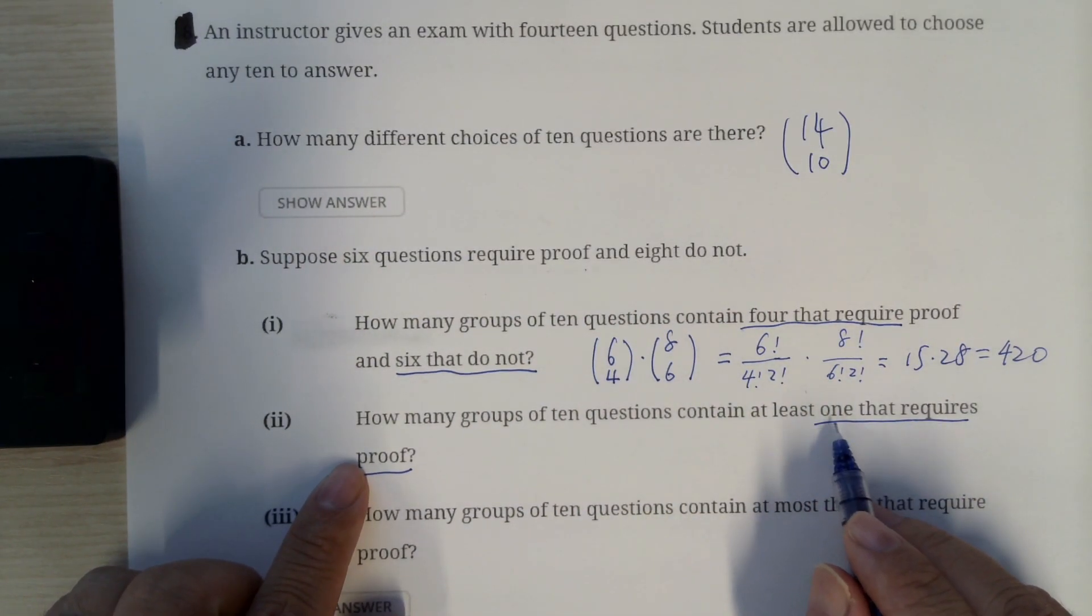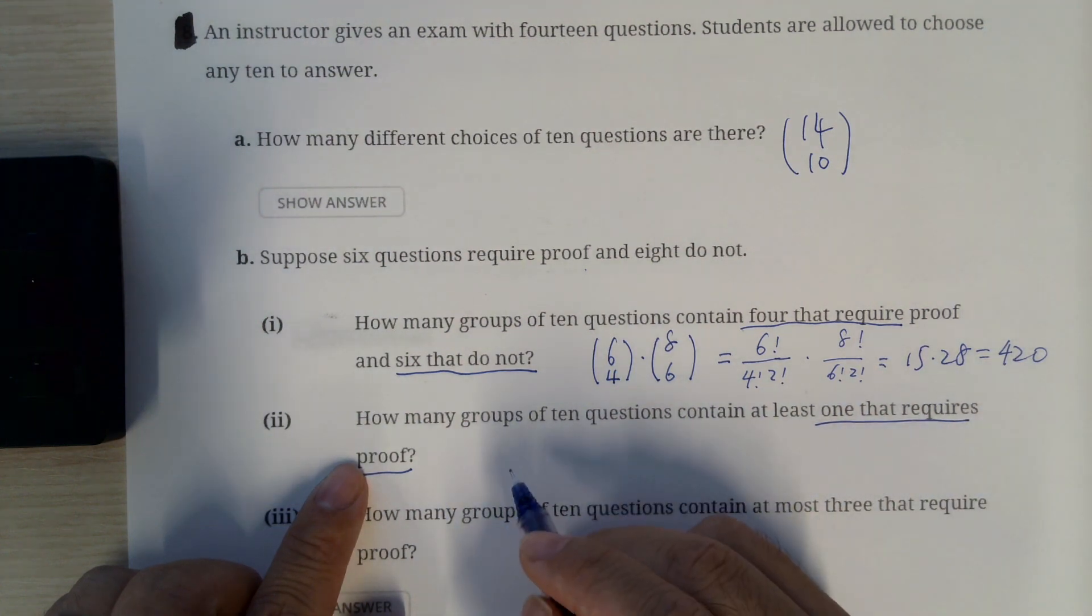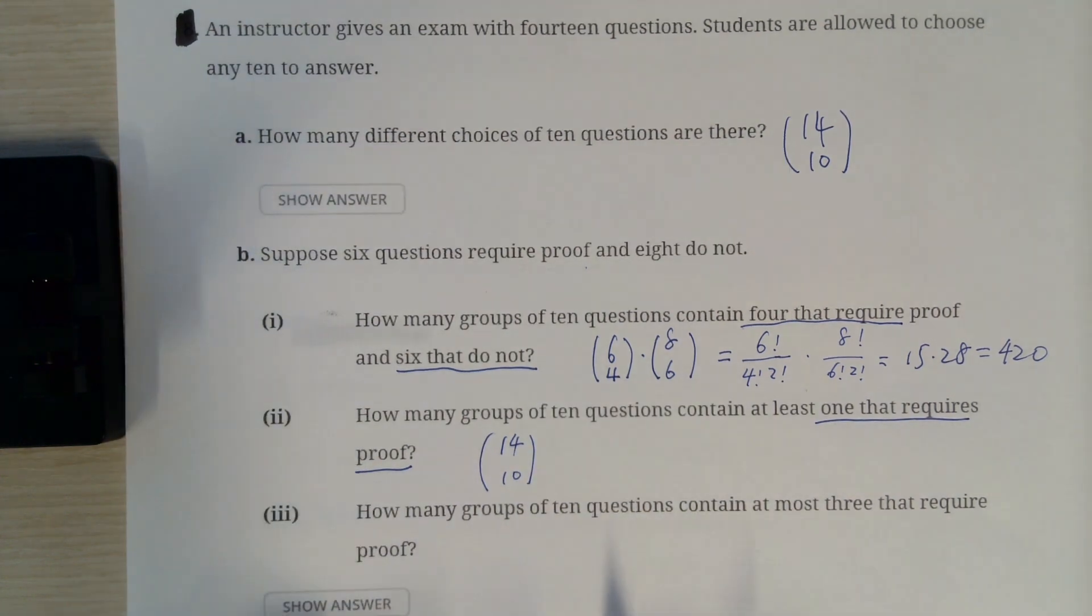In fact, you can even read this one as two. So it's gonna be, again, 14 choose 10.